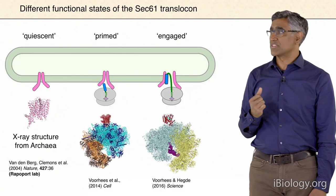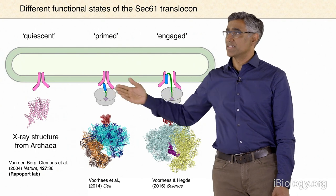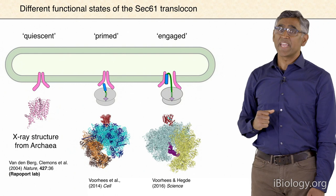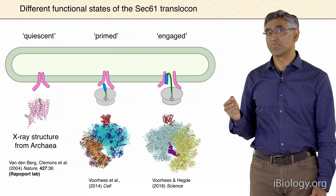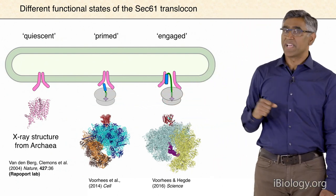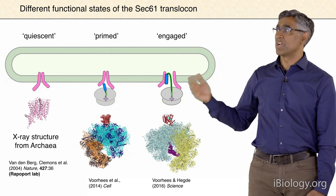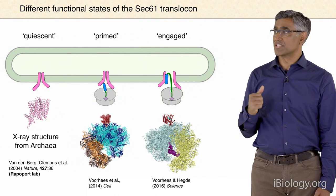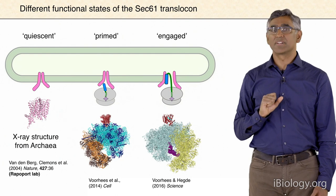Sharpening the density maps allows us to confidently place the backbone and many side chains of the SEC61 complex. We can then construct an atomic model of SEC61 engaged by this extra helical density, which we assign to a signal peptide. With this structure, we now have snapshots of the quiescent state, the primed state when the ribosome first arrives, and the engaged state when a signal peptide has bound to the SEC61 complex.